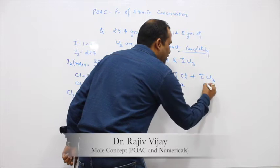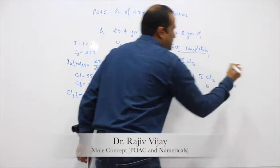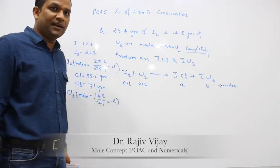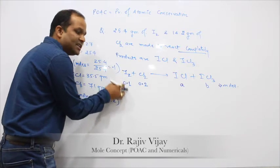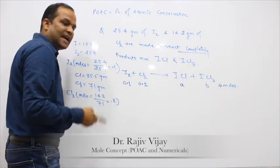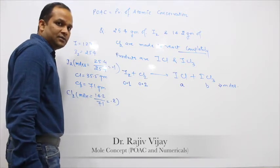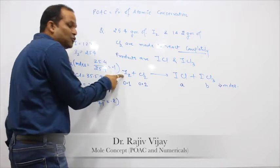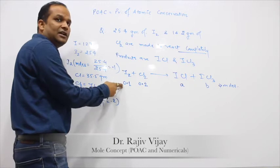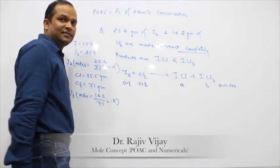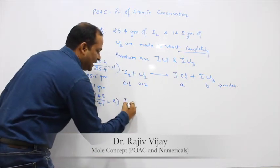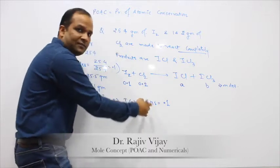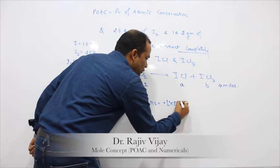Suppose the moles of ICl formed are A and moles of ICl₃ formed are B. We need to find atoms. To find atoms, multiply moles by Avogadro's number — but Nₐ cancels out on both sides. Iodine on the left-hand side: 0.1 moles of I₂, and I₂ contains two atoms of iodine, so left-hand side iodine atoms = 0.1 × 2 × Nₐ. On the right-hand side: A moles of ICl (1 iodine each) = A × 1 × Nₐ, and B moles of ICl₃ (1 iodine each) = B × 1 × Nₐ.